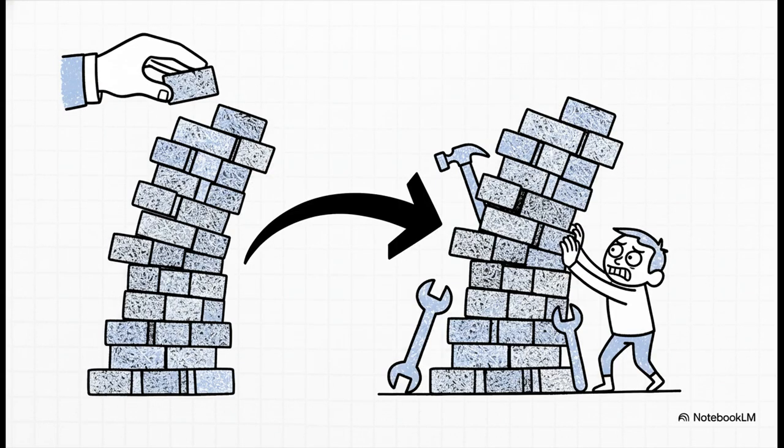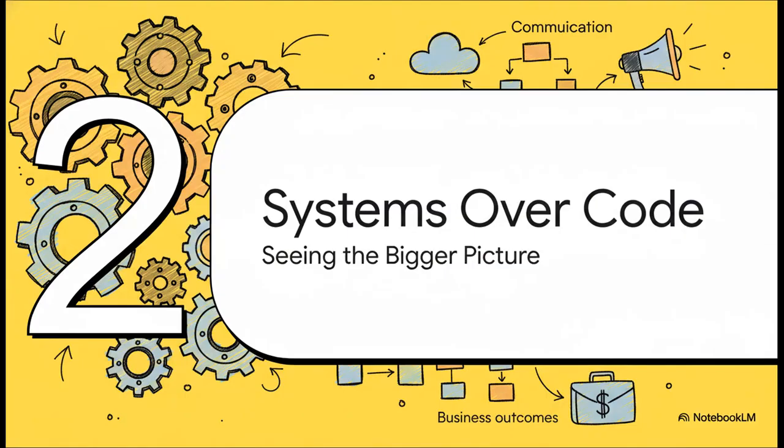And here is a core, fundamental truth. Code isn't an asset. It's actually a liability. You see, every single line you write has a long-term cost attached to it. It has to be read, understood, tested, and maintained forever. So more code just means more complexity and a lot more places for bugs to hide. This is a principle that senior engineers absolutely live by.